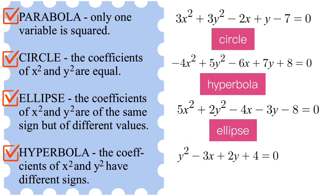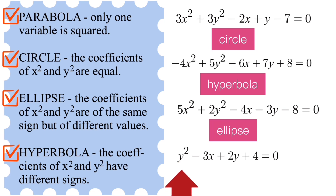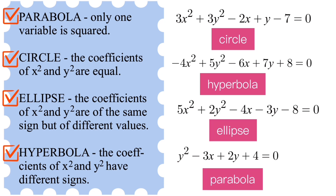In this last example we can see that only one variable is squared, and that is y². This tells us that this is an example of a parabola.